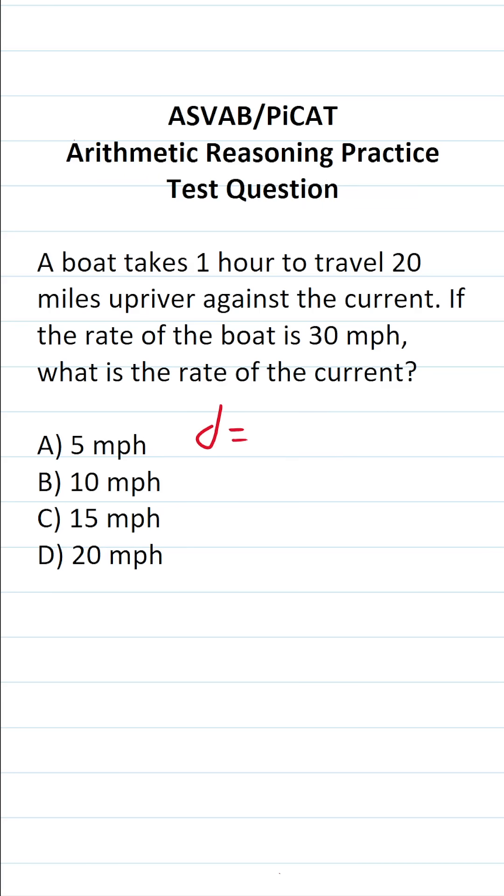At first glance, you're probably saying to yourself that you recognize all the elements of the distance formula. The boat travels a distance of 20 miles, it's traveling at a rate of 30 miles per hour, and it took a time of one hour to complete the trip.